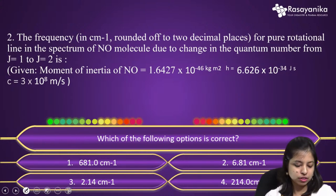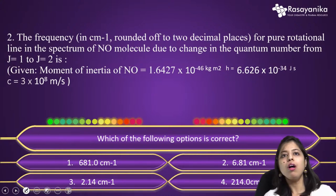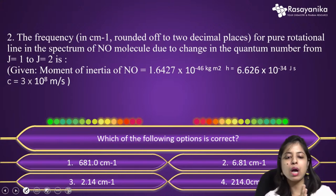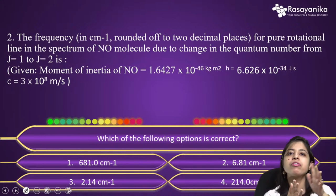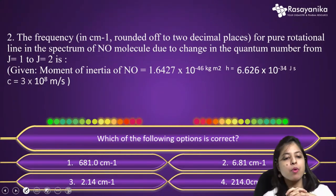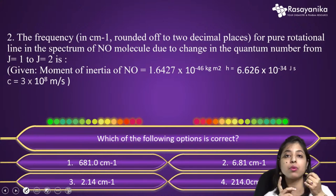Mohammed Kalibullah answered 6.81 cm⁻¹, that is option B. Let's start with our solution. This is basically from the spectroscopy part of physical chemistry — specifically rotational spectroscopy. You need to know two things: the energy of each rotational level and the difference of energy.